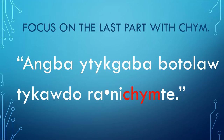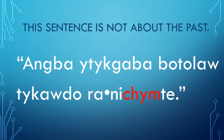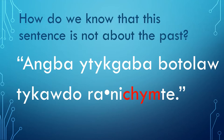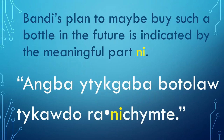Focus on the last part with Chm. Is this sentence telling us about the past or not? This sentence is not about the past. How do we know? Well, Bandi does not already have such a bottle. He is thinking about maybe buying one in the future. Bandi's plan to maybe buy such a bottle in the future is indicated by the meaningful part Ni.